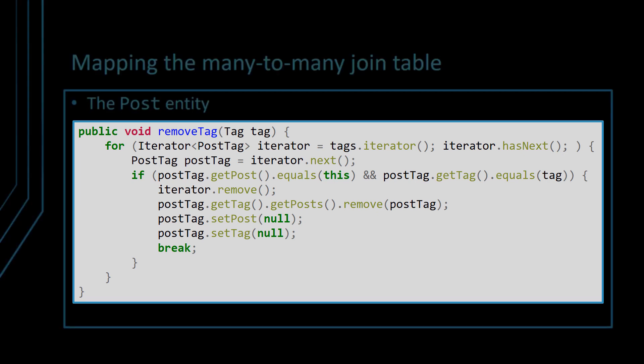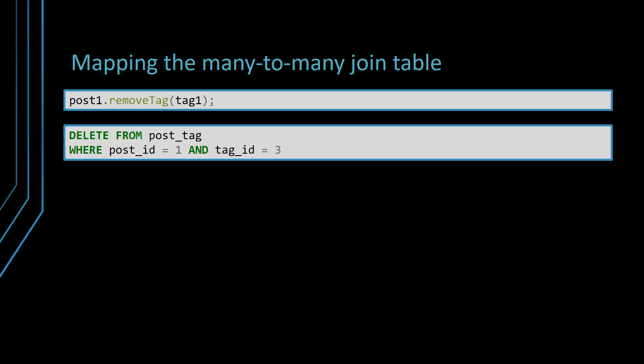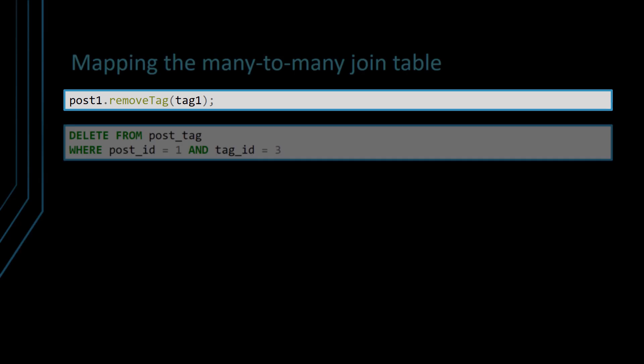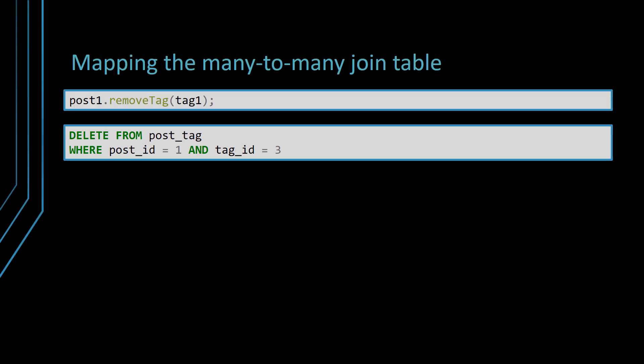However, implementing the remove tag method is not as trivial as a typical one-to-many parent-child association. That's because we need to synchronize two collections and two many-to-one associations. In spite of the increased mapping complexity, mapping the many-to-many JPA entity has its benefits. When removing a PostTag element, Hibernate is going to issue just one delete statement, which removes the associated record. So, apart from allowing us to map extra columns that might be contained in the underlying join table, in case you are using a java.util.List, performance is much better than when using the @ManyToMany JPA annotation.